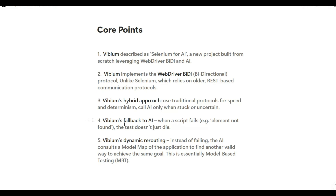The third point is Vibium's hybrid approach, and the fourth is Vibium's fallback to AI — I'll cover these together. Vibium still uses traditional protocols for speed and determinism, but it calls AI when stuck or uncertain. For example, whenever a script fails — say you are not able to click on an element or find an element — the test is not simply going to die, as it would in traditional automation.